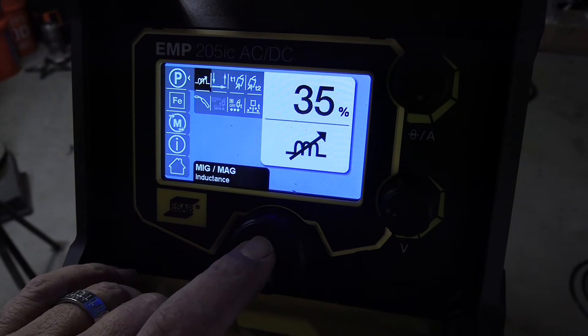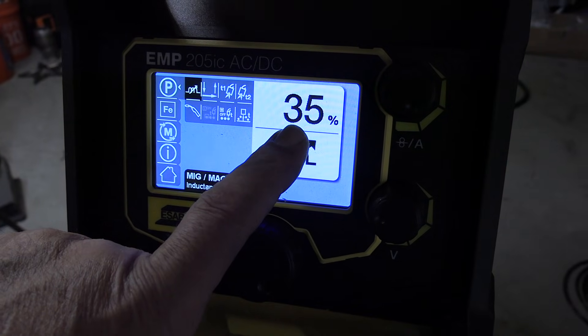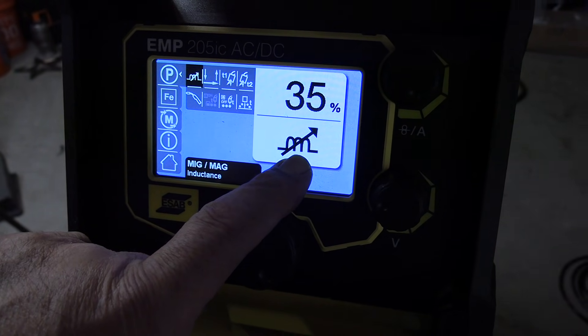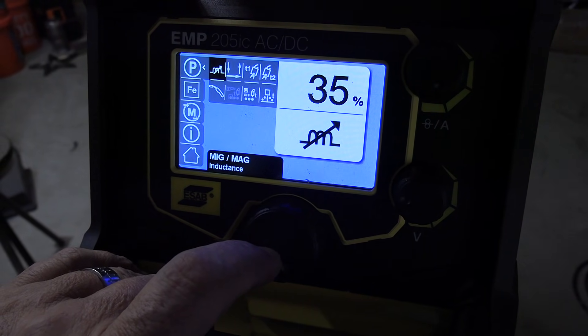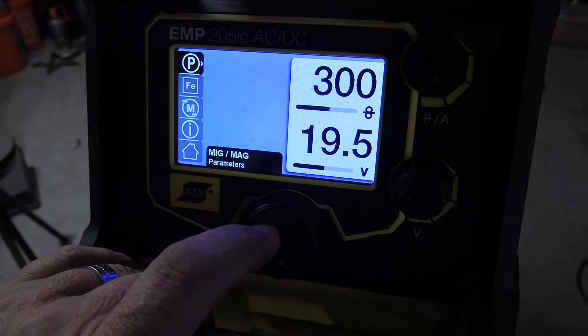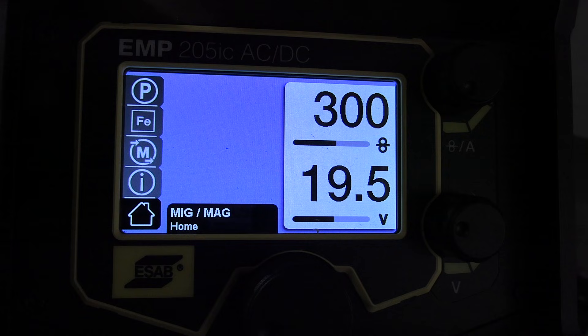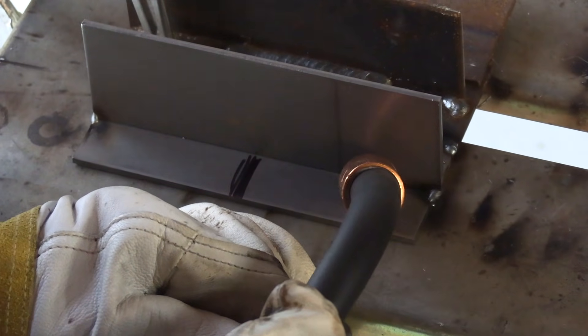I set the machine manually to that and 35% inductance. We'll play around with the inductance on uphill later. But this machine's got a lot of other options. I could set it on smart MIG, also called S-MIG, and just set my metal thickness and it would kind of dial things in for me. But this is what I'm doing today.